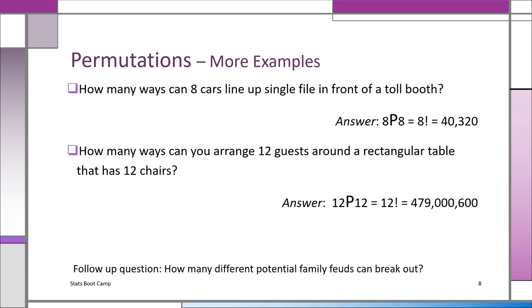The fourth example. How many ways can you arrange 12 guests around the table that has 12 chairs? Well, the chairs are not like the slots or the spaces. So N is 12 for 12 guests. You want to put them around the table that has 12 chairs. That's 12 permutation 12, which is 12 factorial. And look at the incredible number that is, 479,600,000.